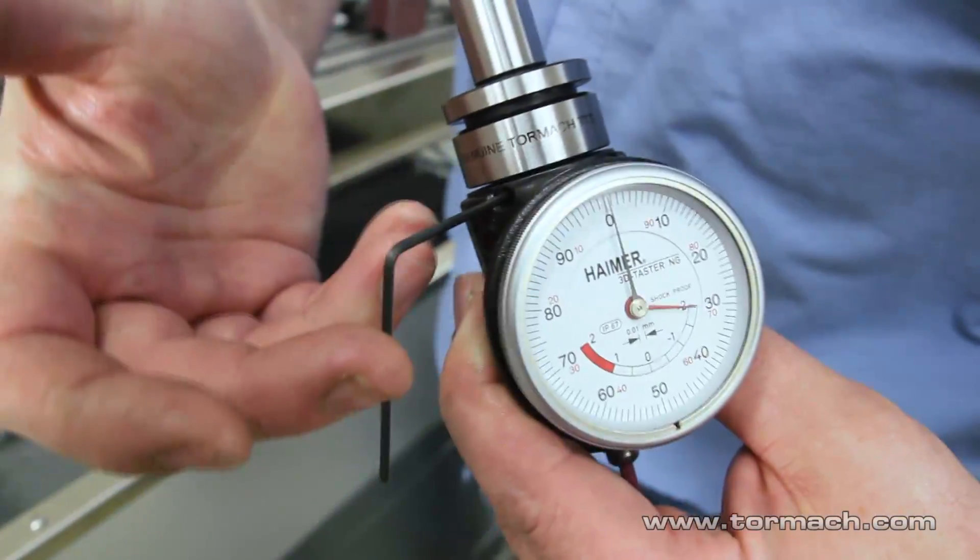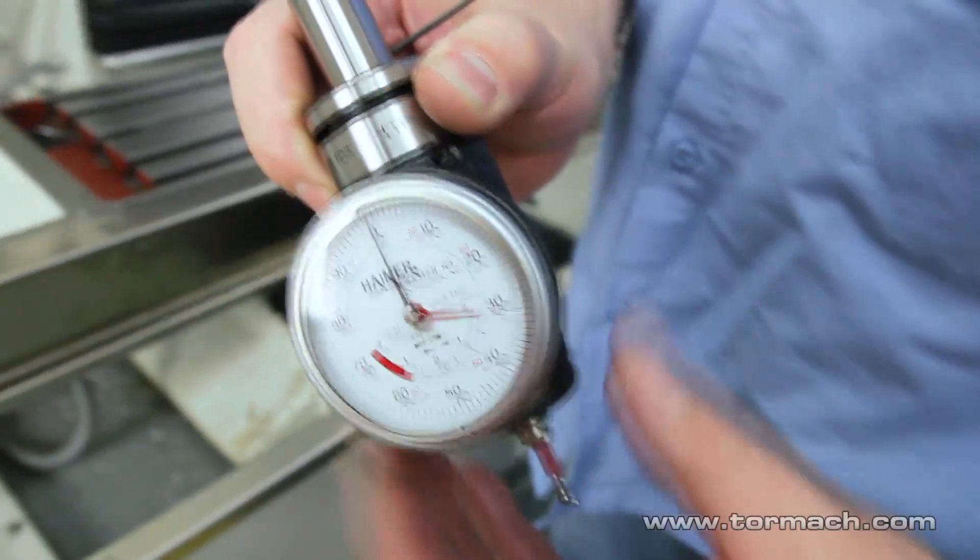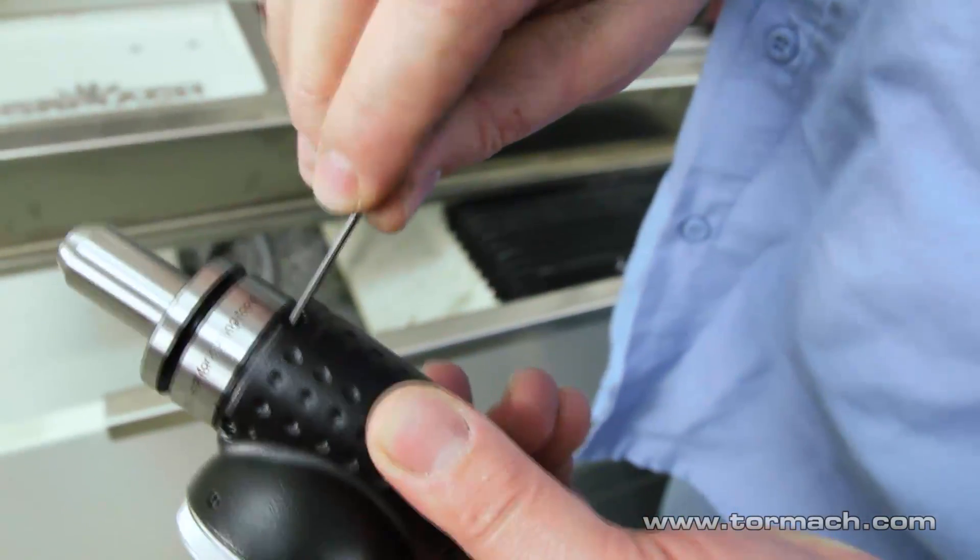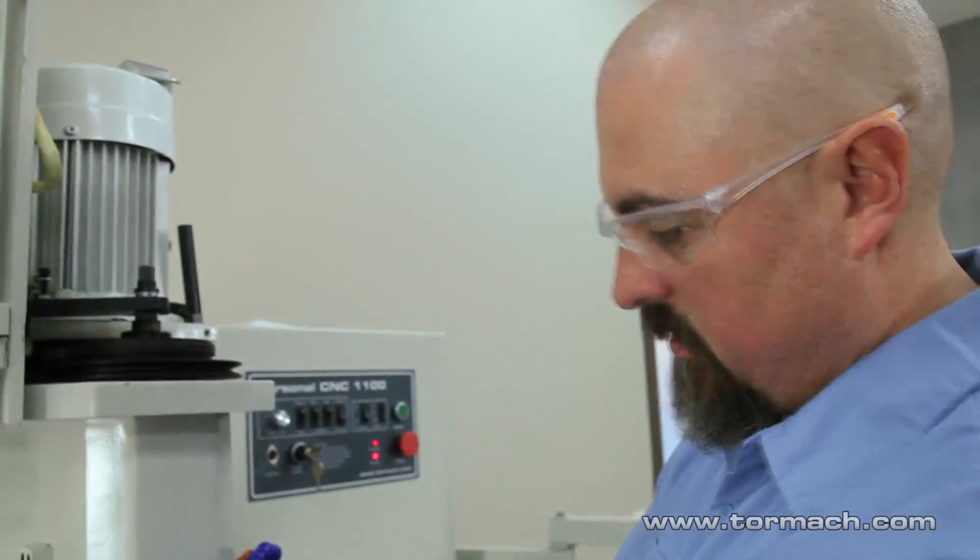There's a supplied Allen wrench, and that's how you're going to adjust the concentricity of the tip to the spindle. There's four set screws on it. Let's clamp it up. Let's see how it runs.